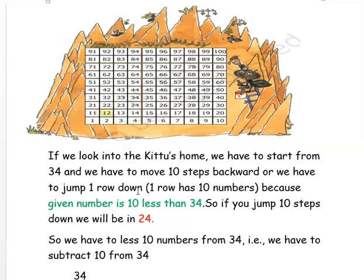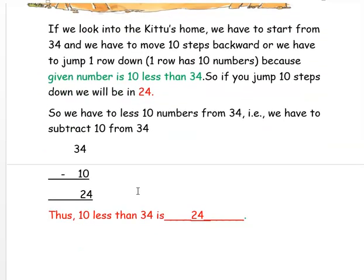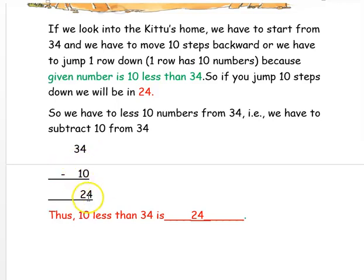We can also find this using subtraction: 34 minus 10 — 4 minus 0 is 4, and 3 minus 1 is 2 — so 10 less than 34 is 24.